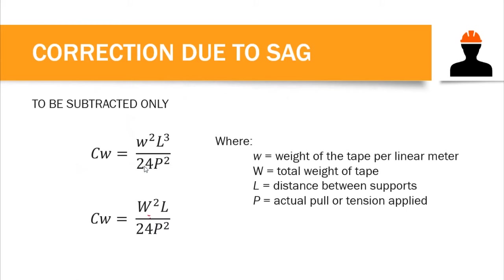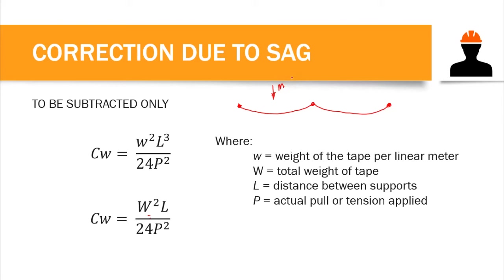We also have the correction due to the weight of the tape. If you do not exert enough pull, there will be sagging — a bending of the tape due to its weight or mass. We have to make sure that our tape is supported throughout its entire length when measuring or laying out points. If support is only at the ends, there is a greater chance of sagging in the tape.